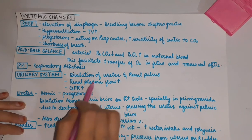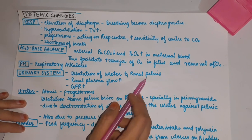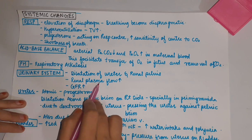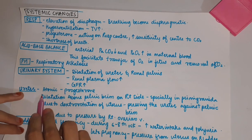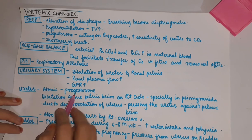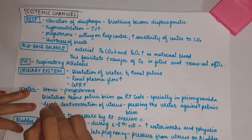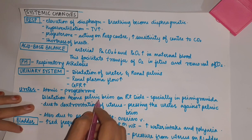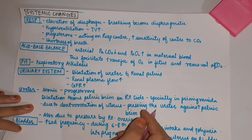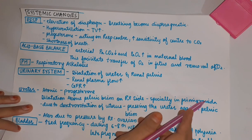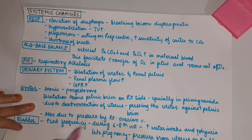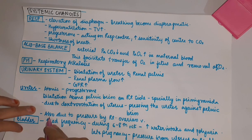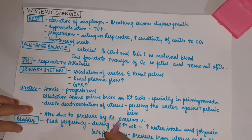Urinary system: there occurs dilatation of the ureter and renal pelvis. Renal plasma flow and glomerular filtration rate increase. The ureter becomes atonic under the influence of progesterone. Dilatation occurs above the pelvic brim especially on the right side, particularly in primigravida, due to dextrorotation of the uterus pressing the ureter against the pelvic brim, and also due to pressure from the right ovarian vein.